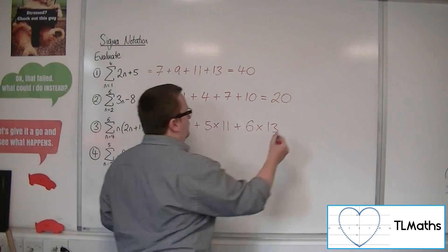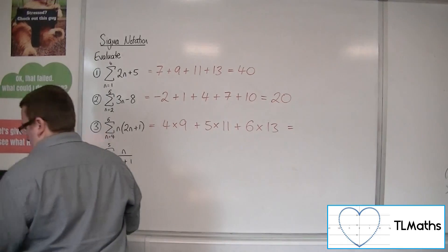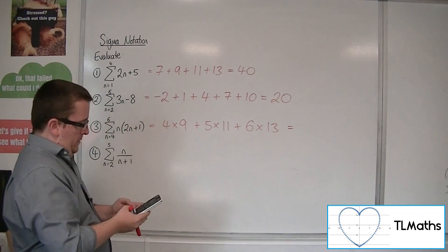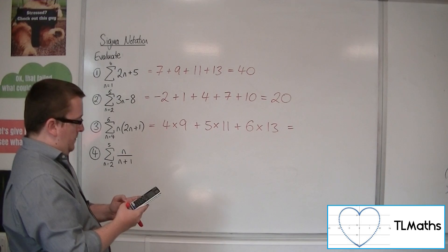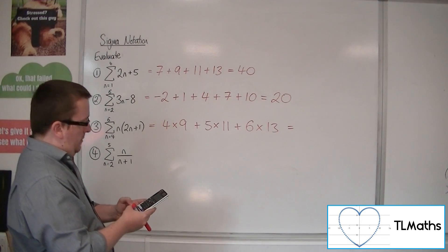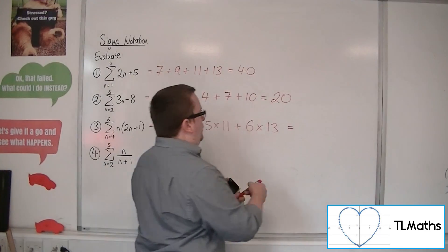So we add all of those together. 4 times 9 plus 5 times 11 plus 6 times 13 makes 169.